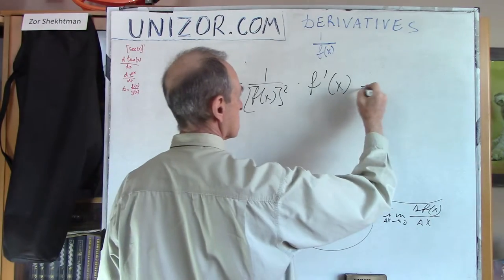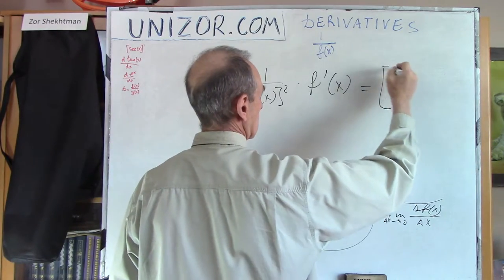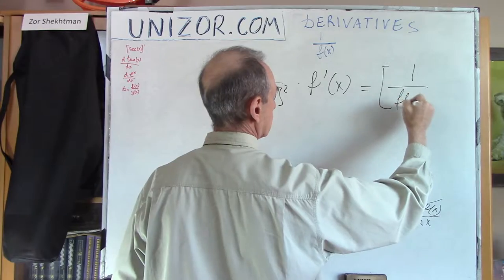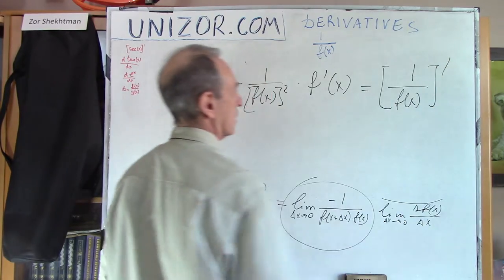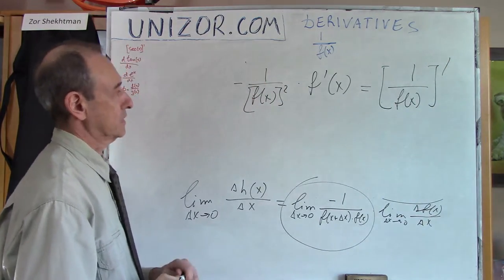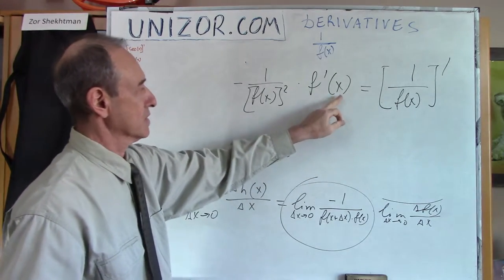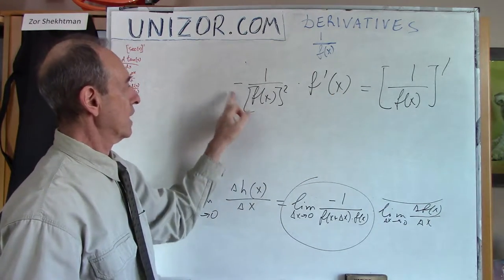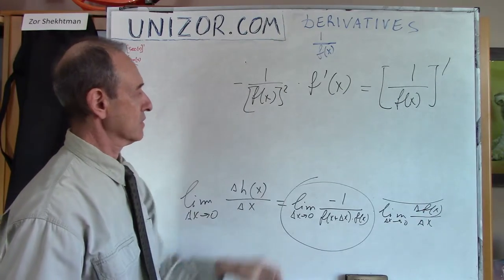The second multiplier is obviously the derivative of f(x). So: the derivative of 1/f(x) equals the derivative of f(x) with a minus sign, divided by the square of the function.